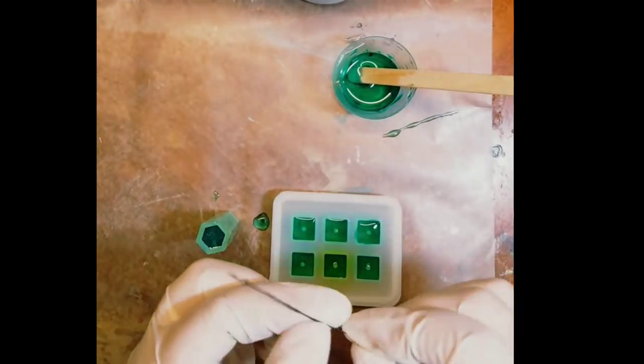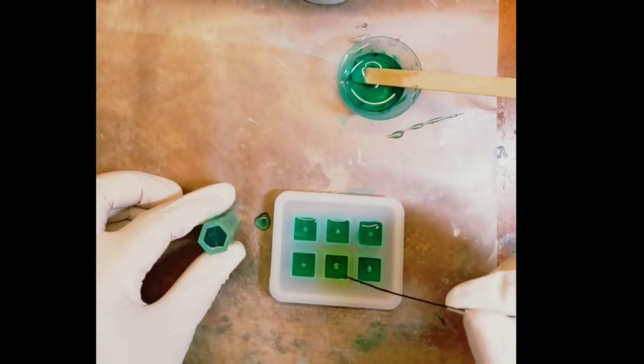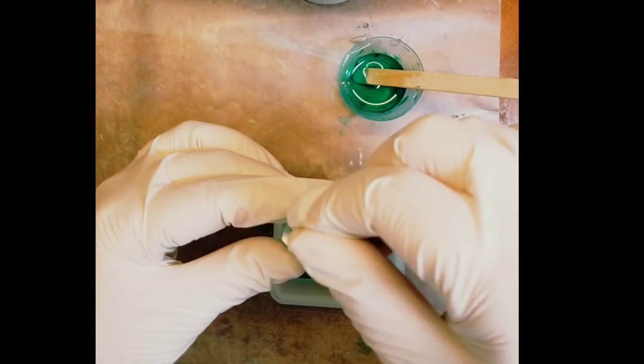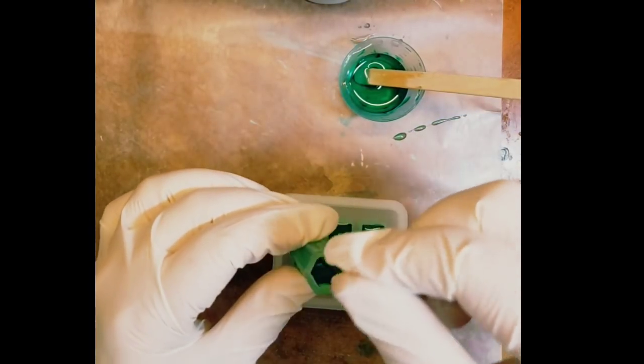Once you've poured the resin into the molds, make sure you take a piece of wire and pop any air bubbles, especially at the tip of the crystal.